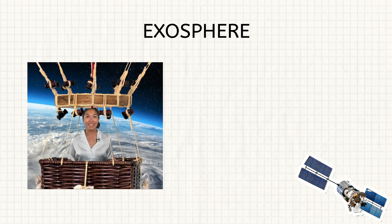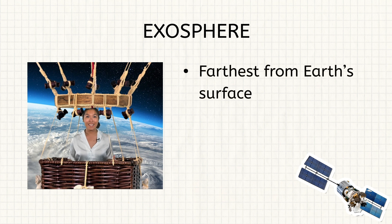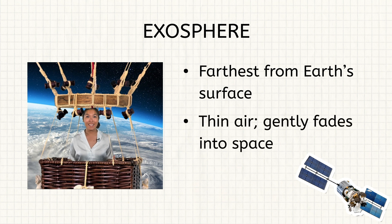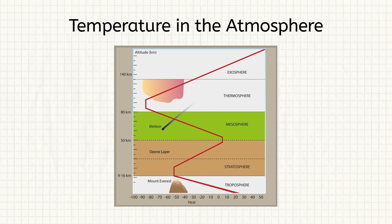Finally, we ended our balloon trip in the exosphere. We were really far from Earth's surface here, about halfway to the moon. This layer has really thin air, but it's peaceful and quiet. This layer doesn't abruptly end — it gently fades into space. Every so often, we can see a satellite orbiting Earth and collecting important data. When we look back at our trip log, we can see how the different layers also have different temperature ranges. We collected some data on these temperature changes — check them out in our explorer journal.